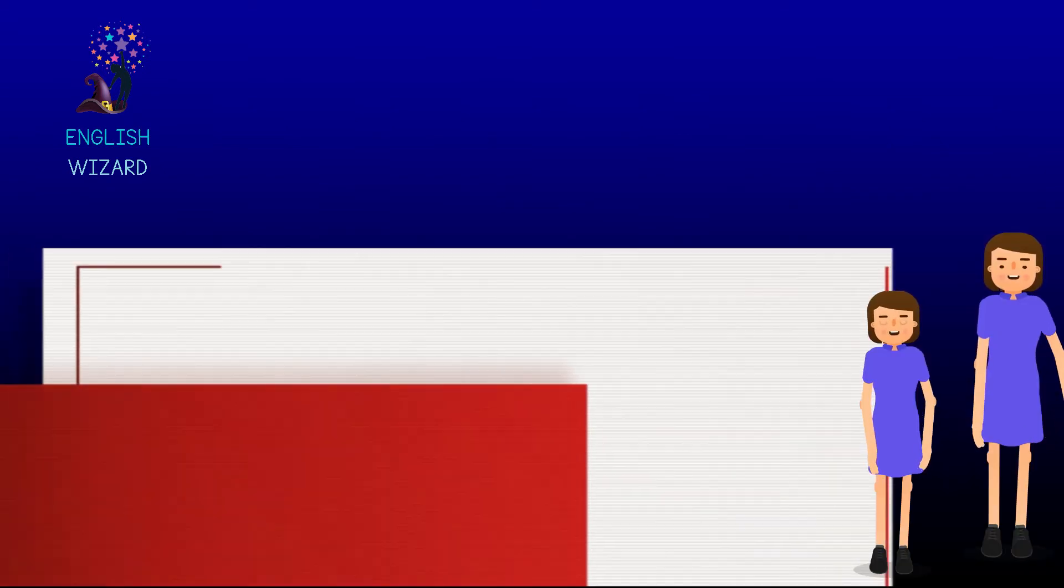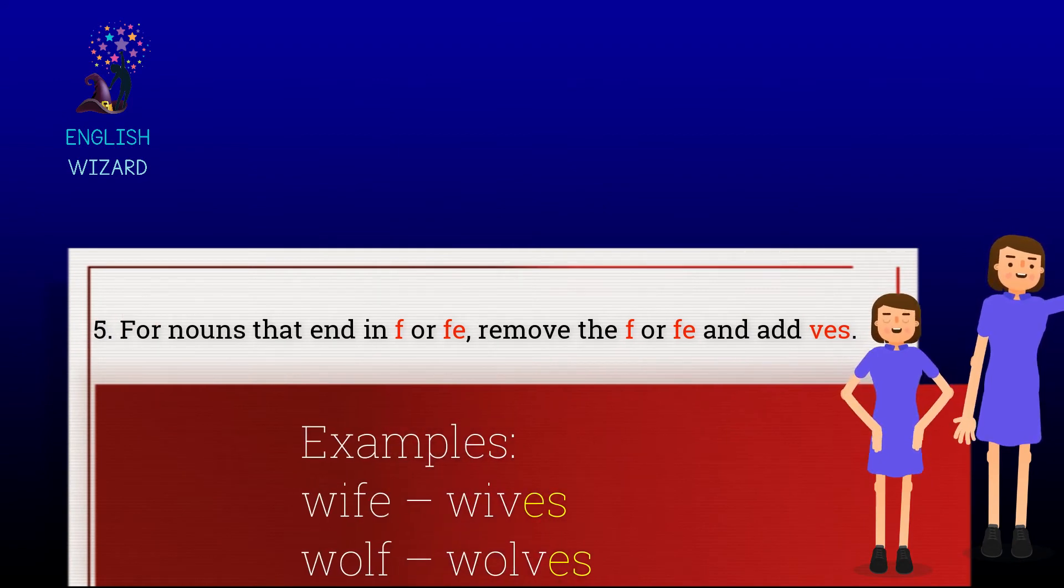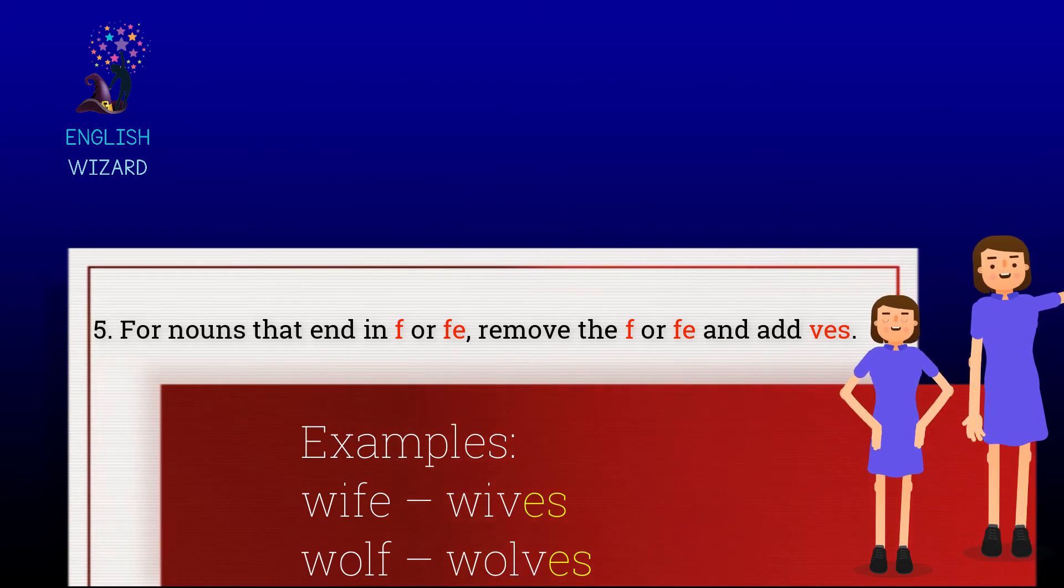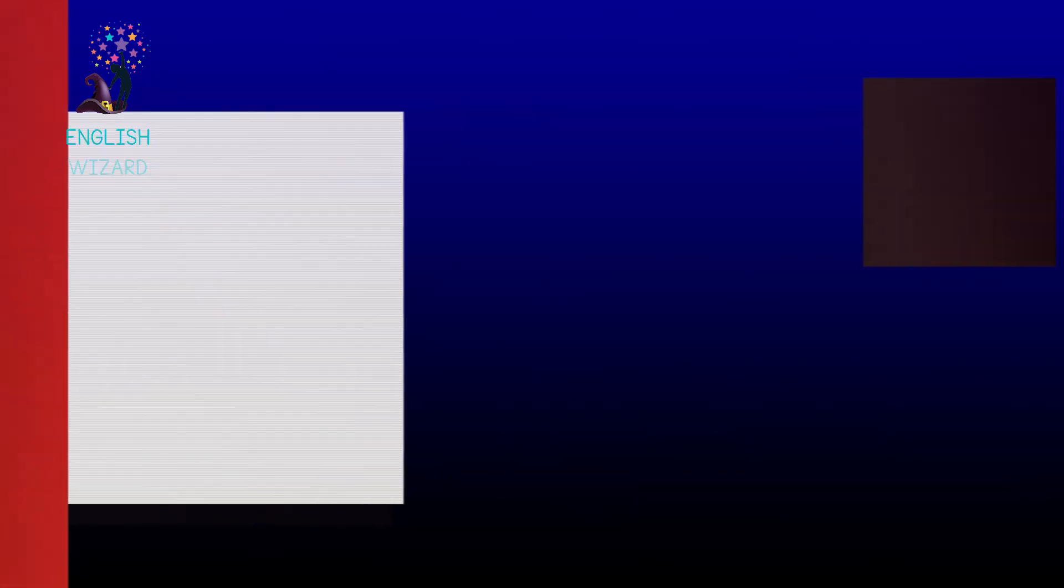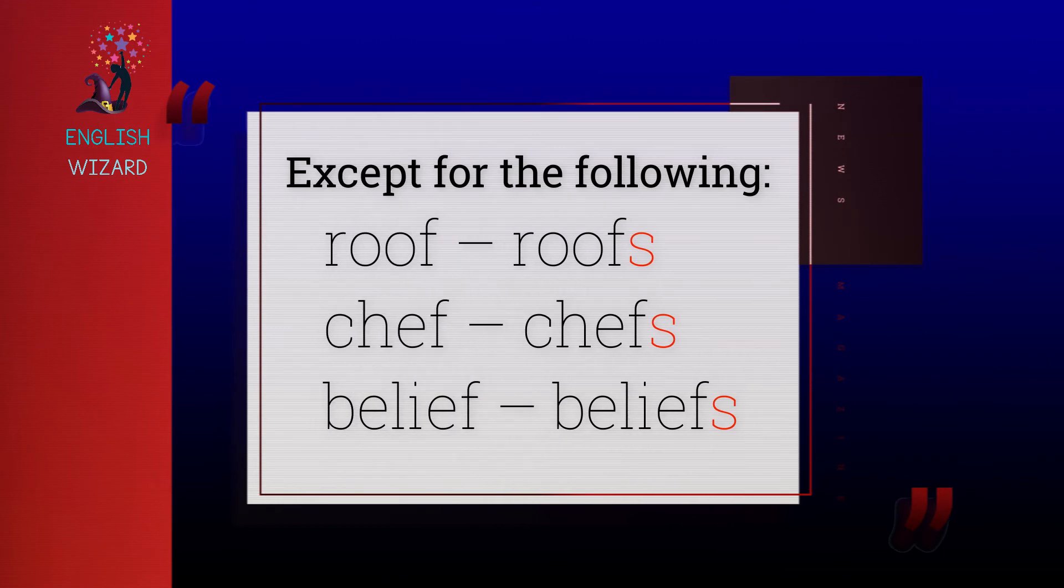For nouns that end in -fe, remove -fe and add -ves. Examples: Wife, wives. Wolf, wolves. Except for the following: Roof, roofs. Chef, chefs. Belief, beliefs.